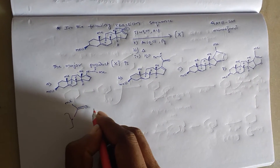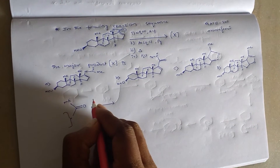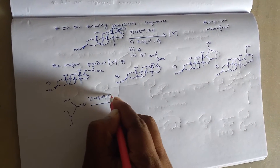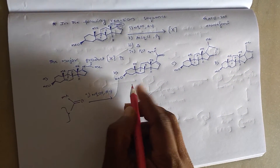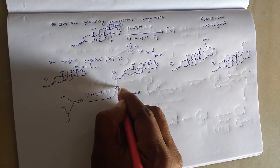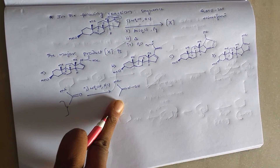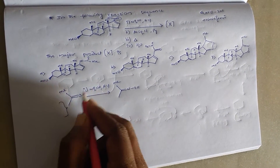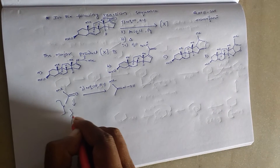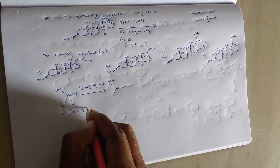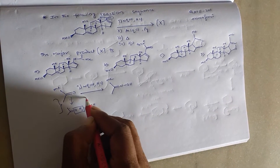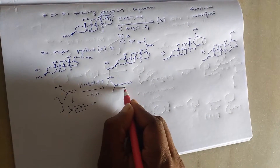The first step is this carbonyl carbon reacting with hydroxylamine and HCl. Here we are going to get a hydroxylamine compound. What is the reaction here? There is a removal of water, and we are going to get this oxime compound.